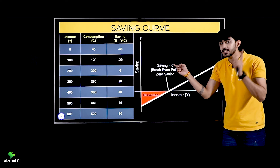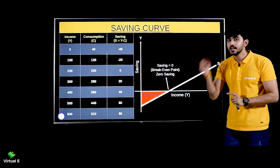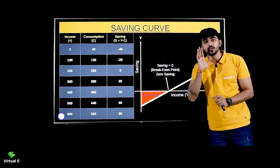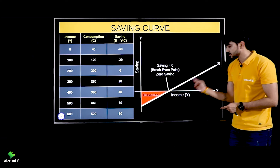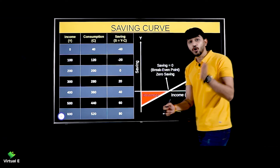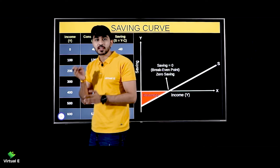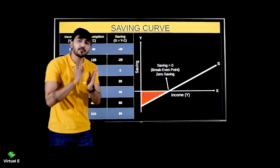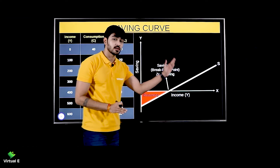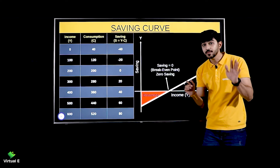This point on the graph is known as the break-even point — the point of zero savings — where saving is equal to zero. And then the third phase: income is more than consumption, meaning now you are finally saving something. So the savings curve is finally positive. I hope there is no doubt.